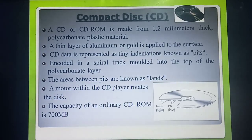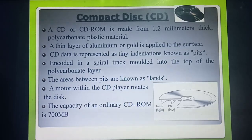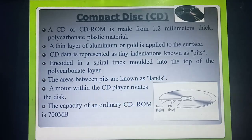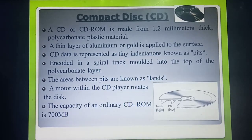Next one is compact disk — short form CD. You are all familiar with CD. So see the definition. The first point: CD is made up of 1.2 millimeters thick — that's a very important one-mark question, as well as a two-mark and three-mark question. CD is made up of 1.2 millimeters thickness, which is very thin. It is made up of polycarbonate plastic material.